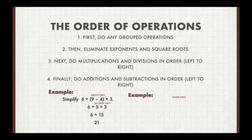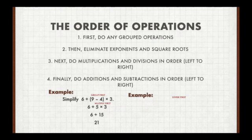We do the grouped ones first: 9 minus 4 gives us 5. Now we have 6 plus 5 times 3. What do we do first? We do multiplication or division — there's no square root, no exponent — so we do 5 times 3, which is 15. Then we do the addition: 6 plus 15 is 21.